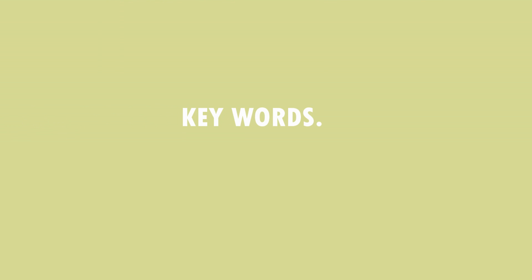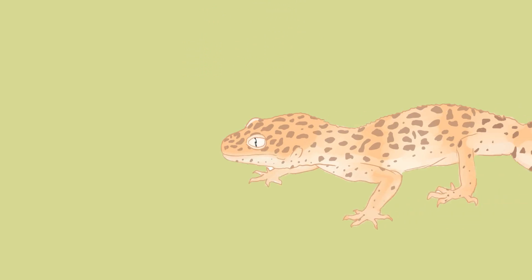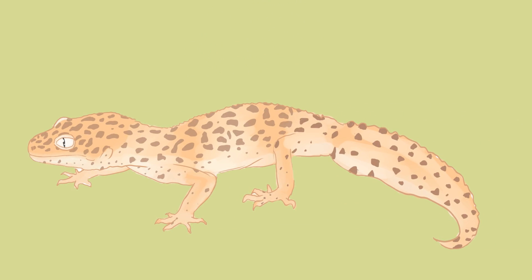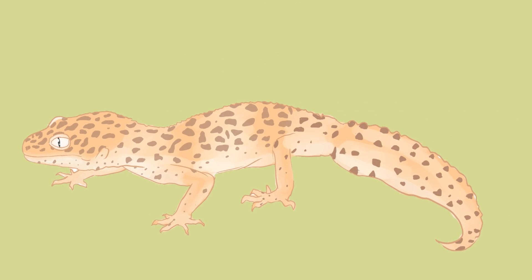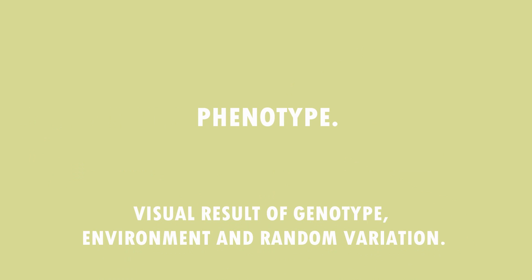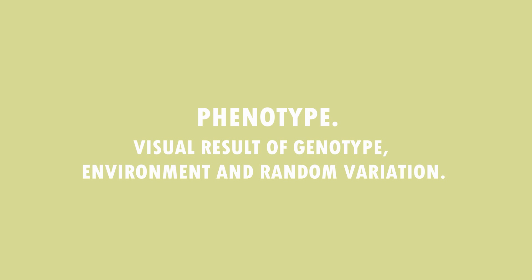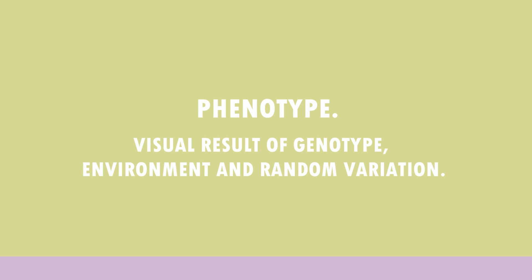Before we get onto morphs I want to make sure you guys know a few key words so nobody gets left behind. First let's look at this — this is obviously a leopard gecko and what you're currently looking at is its phenotype. A phenotype is a visual result of an animal's genotype, environment and random variation.